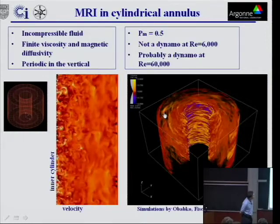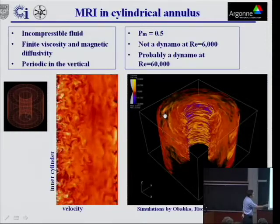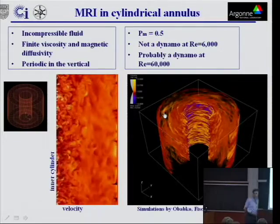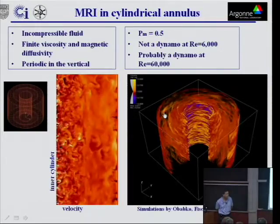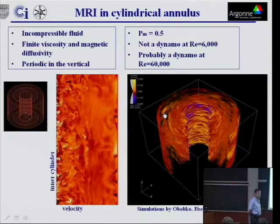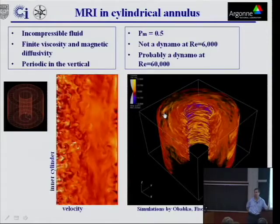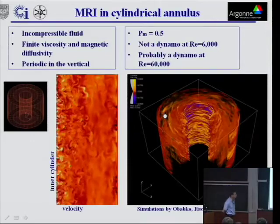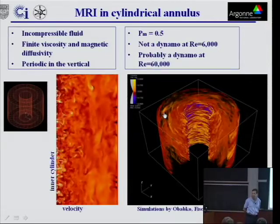But you get an idea of what this thing does. So this is the inner cylinder, that's the outer cylinder. So this is like a cut, it's a meridional cut through that box over there. And what you're seeing are the velocity, the azimuthal velocity fluctuations, and the coding is like, if it's bright, it's going faster than the average, and if it's dark, it's going slower than the average.